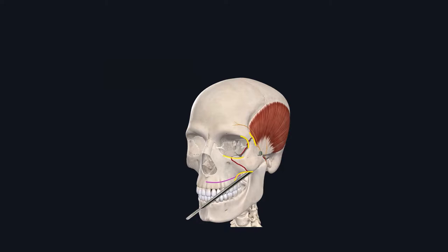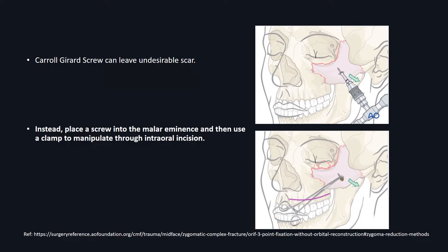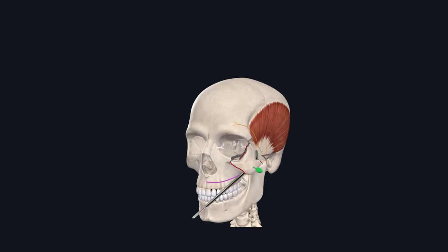Once the entire lateral buttress curvature and lateral orbital rim visual references show good signs of reduction, you're ready to plate. Two other methods for achieving disimpaction of the ZMC segment include the Carroll-Girard screw, placed through a transcutaneous incision — the major downside being a transcutaneous cheek incision — or placing the screw through the thick part of the malar eminence and using a right-angle instrument through the intraoral incision to lift it. In my experience, using a urethral dilator placed intraorally has worked in the vast majority of cases to achieve disimpaction.